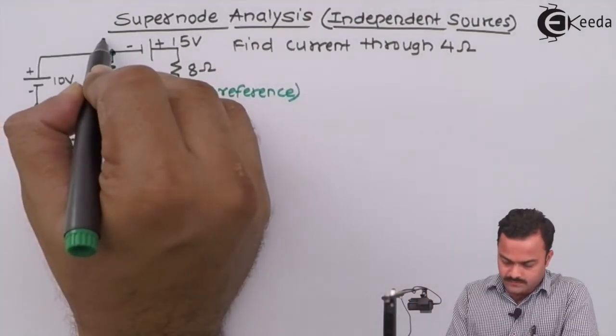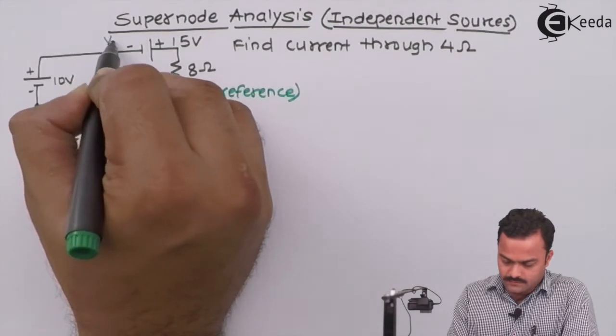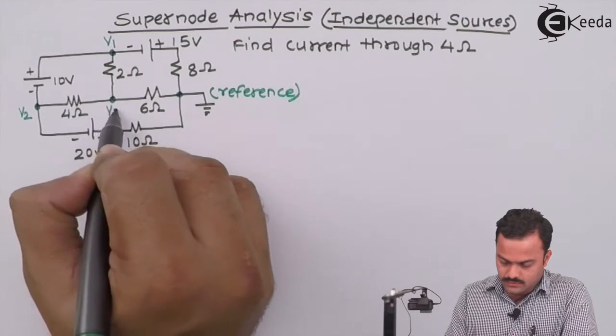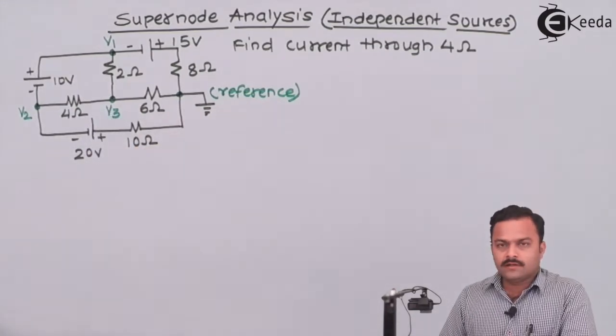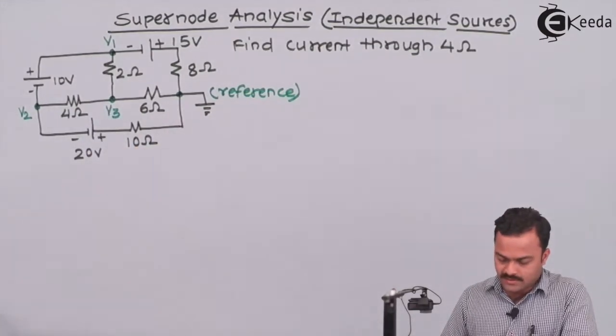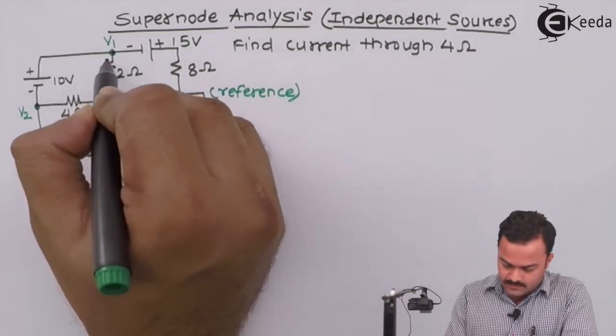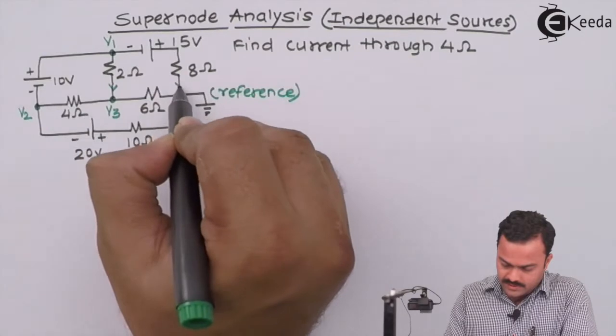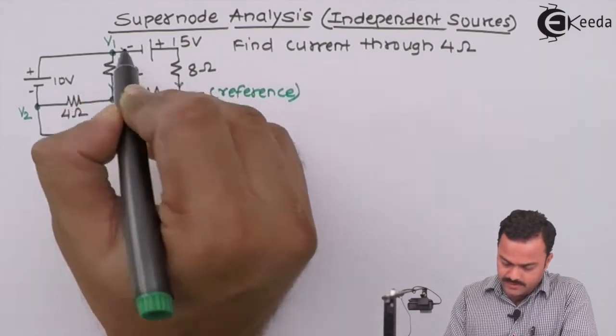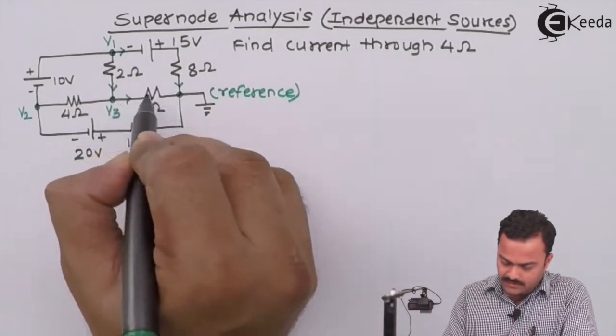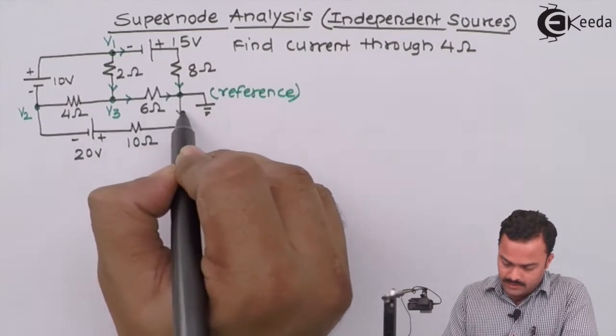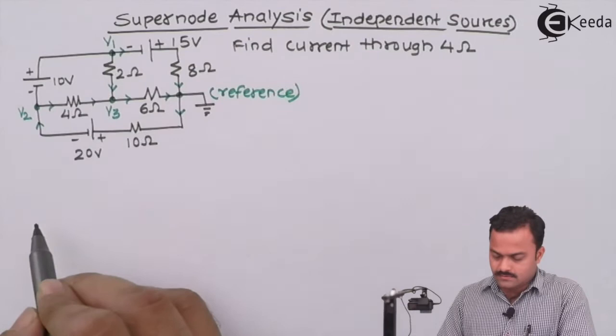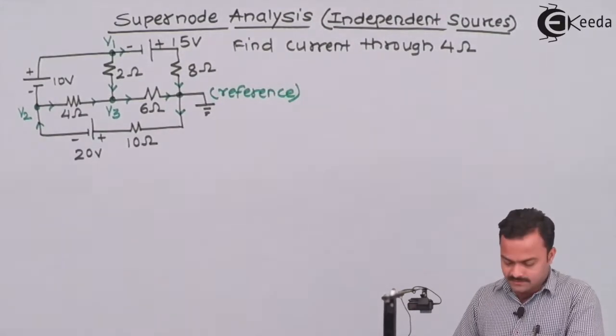So this will become node 1, node 2, and node 3. Let's mark all branch currents. I'll select current directions randomly. No current source is present, so here we are free to mark any random current directions.